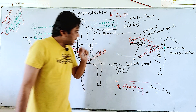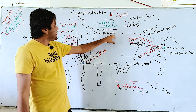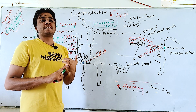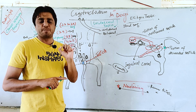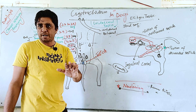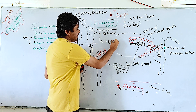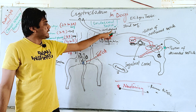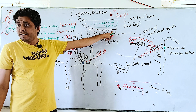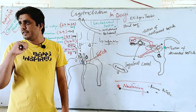Another important point: especially in bilateral cryptorchidism, spermatogenesis is not proper — you will not have good quality sperm and the sperm count is less, so that dog is infertile. In unilateral cases, in about 50 percent of cases the dog may still be fertile, because the single testis that has descended into the scrotum is still producing normal sperm with a normal sperm count. Fertility is an important consideration when discussing cryptorchidism.